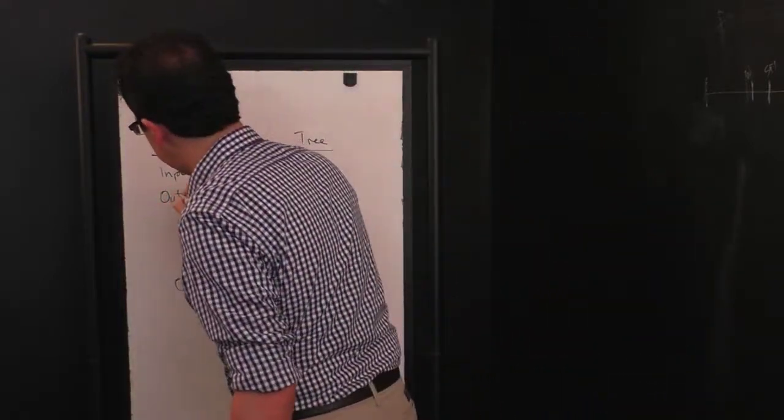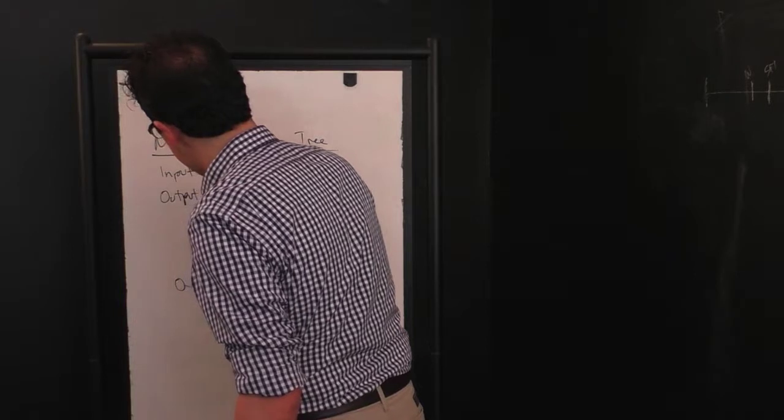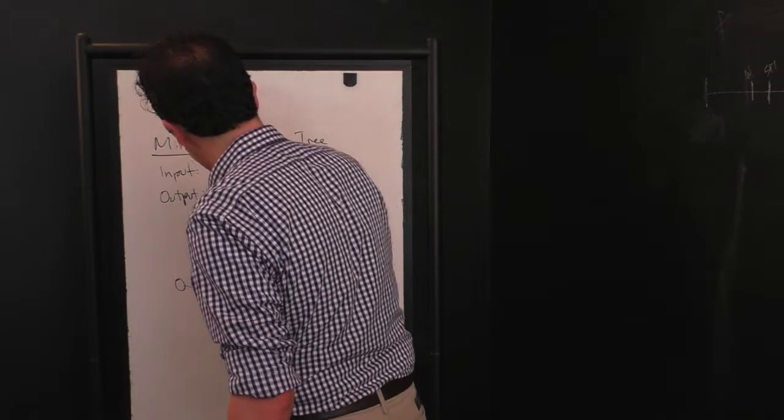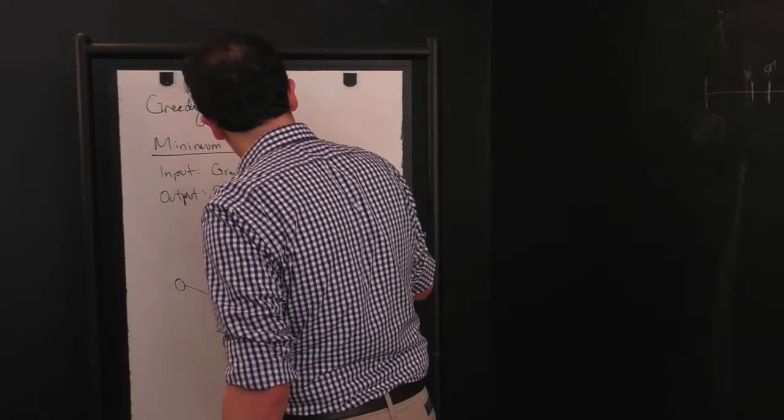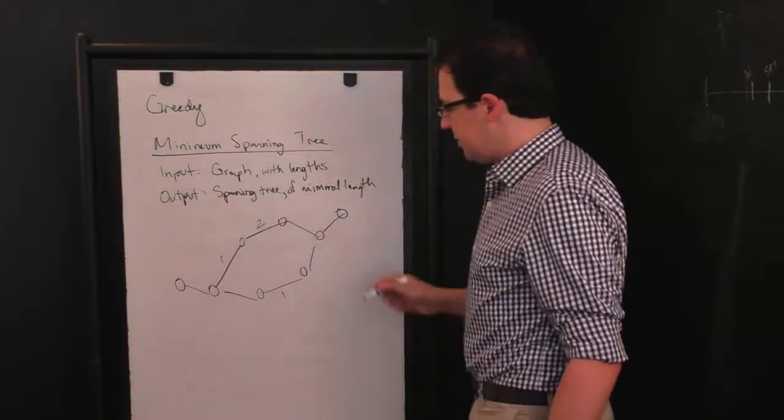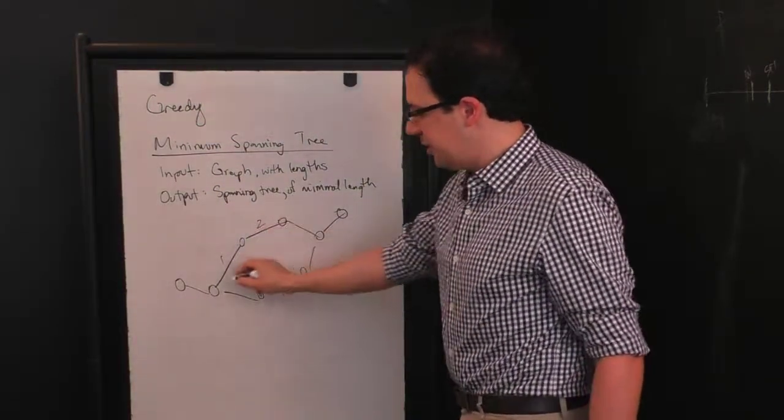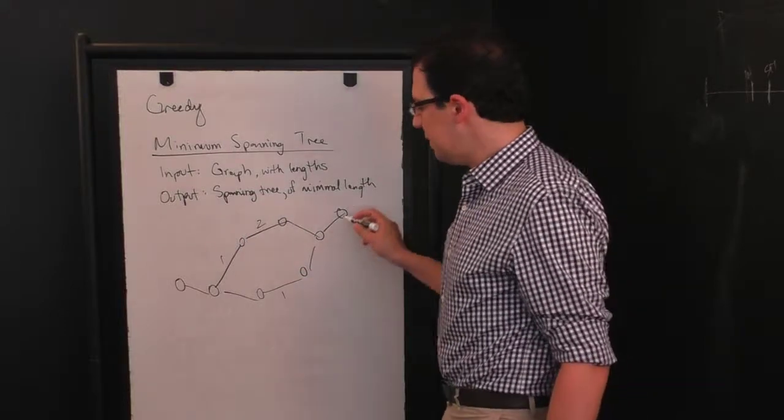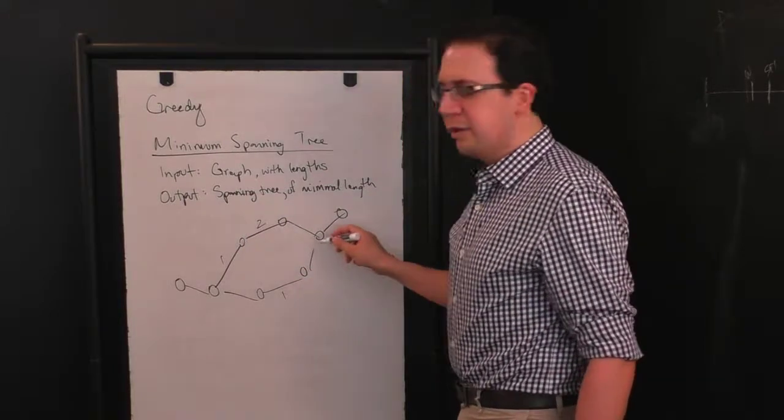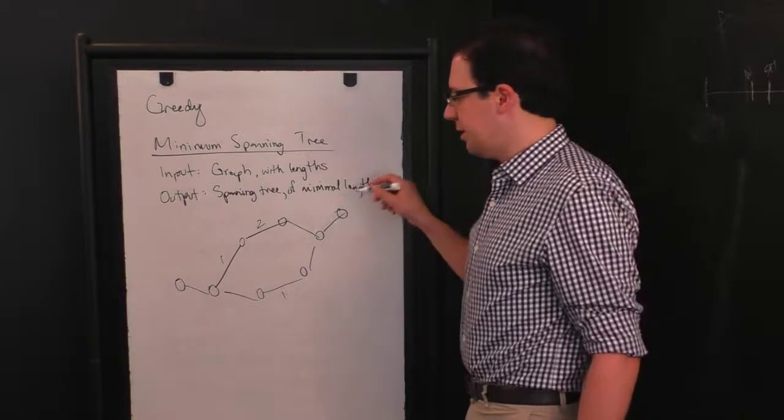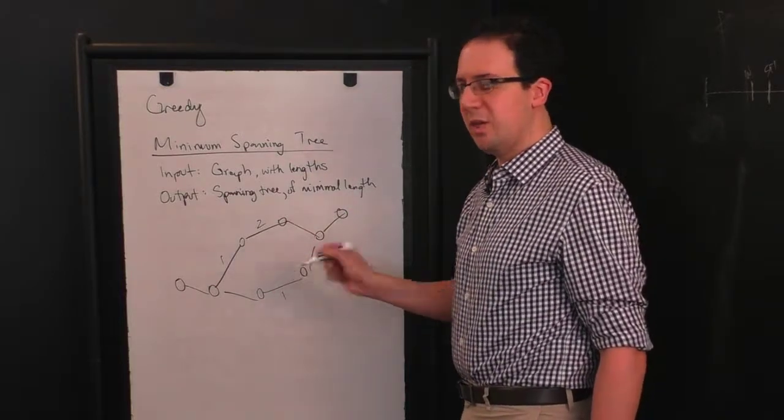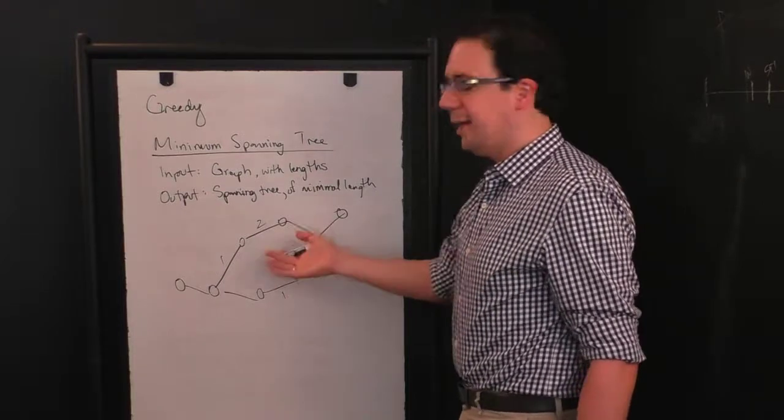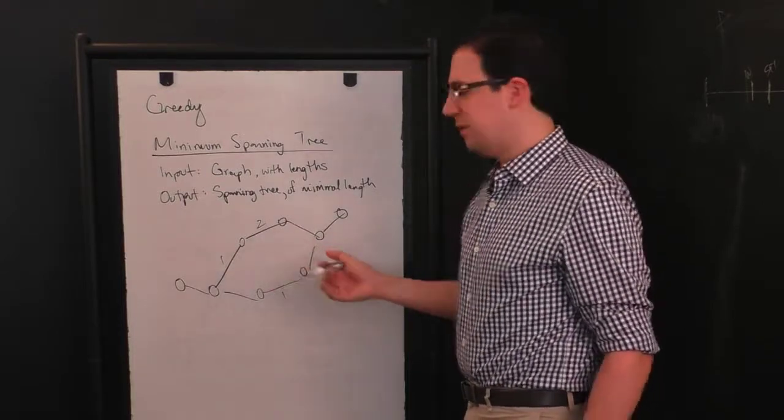The output is a spanning tree, which I'll tell you what that is in a second, of minimal length. So a spanning tree is a selection of the edges such that among the selected edges you can get from every vertex to every other vertex without using any of the unselected edges. And the length of a spanning tree is just the total length of the edges that appear.